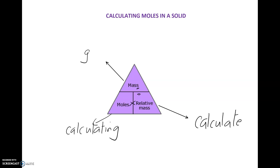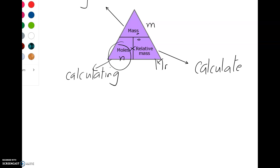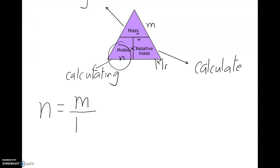Let's look at a typical example of how you will use this triangle. Before we do that, let's start by rearranging them. So if the number of moles is a small n, mass is a small m, and the molar mass is Mr, then n is equal to m divided by Mr.